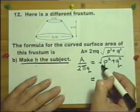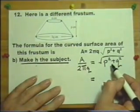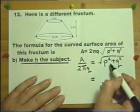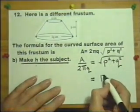Divide both sides by 2πq. Now I'm going to square. When I square a square root, the square root sign disappears.